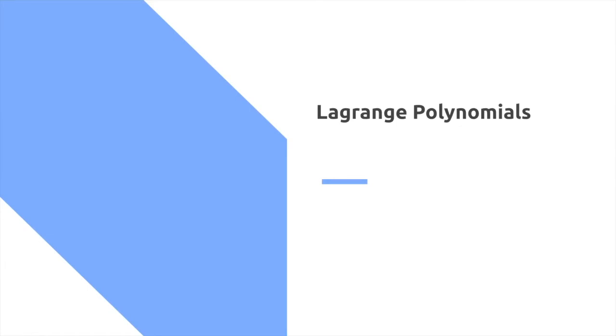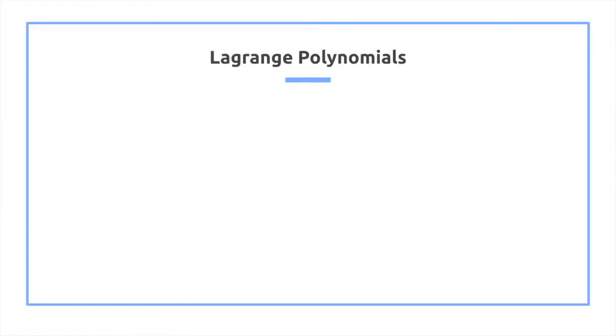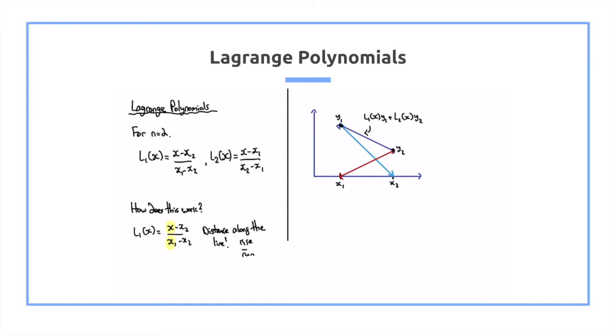So for Lagrange polynomials, to develop an intuition, we can look at this case for n equals 2. Effectively, we're given two points and we want to interpolate what a line of best fit would be between those two points. So here we have this point at y1 and y2, also at x1 and x2.